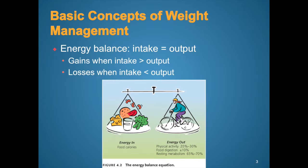The energy-out part of the equation is largely modifiable. We can affect physical activity and push this around the 20–30% range. There is some energy required to digest food — often referred to as the thermic effect of food. But the biggest contributor seems to be baseline resting metabolism: the cost of just doing business on a daily basis, what it costs to keep your body running. We'll talk about how exercise can manipulate this large chunk of the output equation.